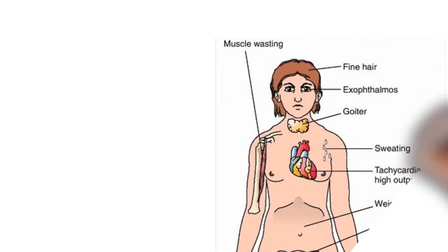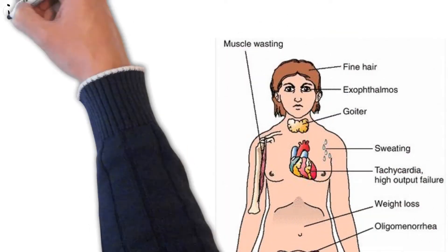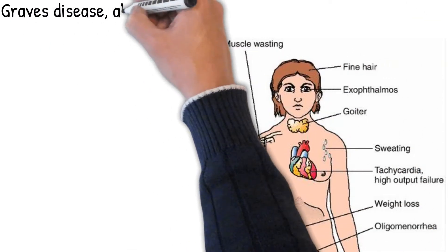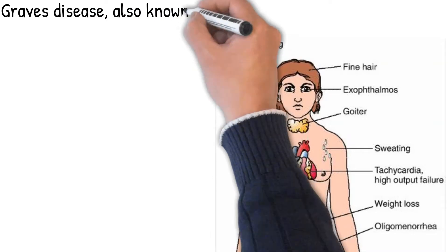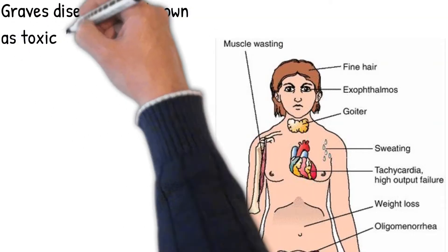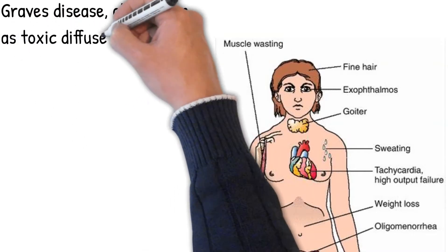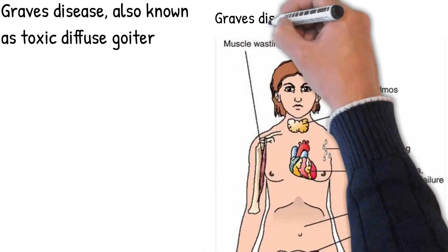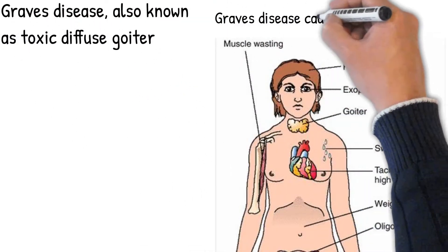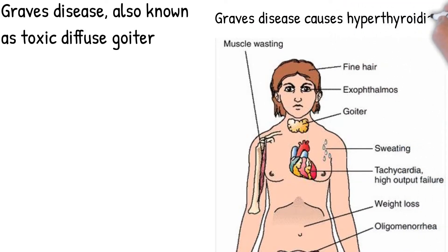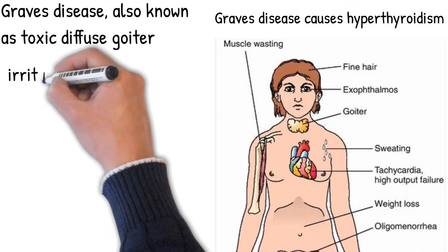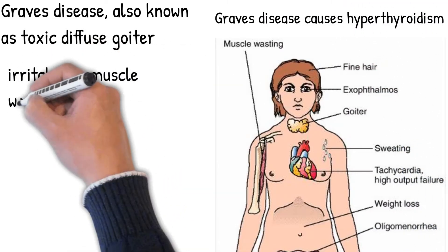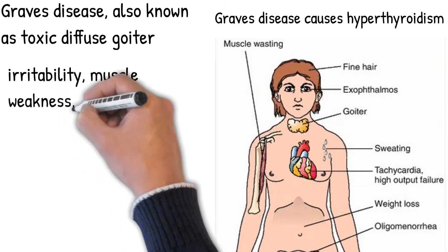Graves' disease, also known as toxic diffuse goiter, is an autoimmune disease that affects the thyroid gland. Graves' disease causes hyperthyroidism — it means increased functioning of the thyroid gland and increase of thyroid hormone production. Graves' disease is the most common cause of hyperthyroidism.